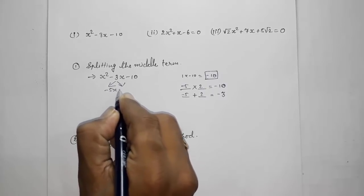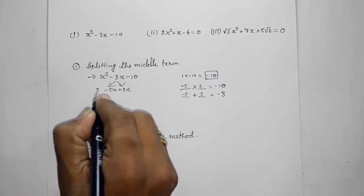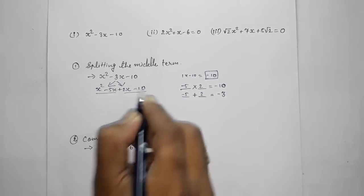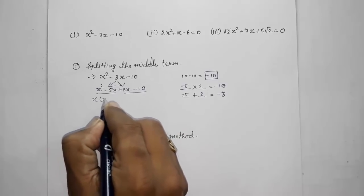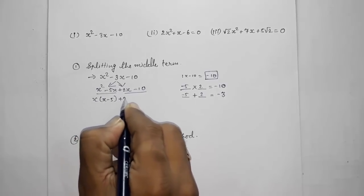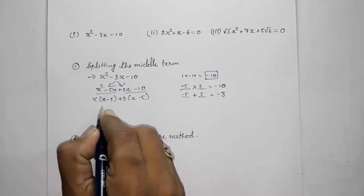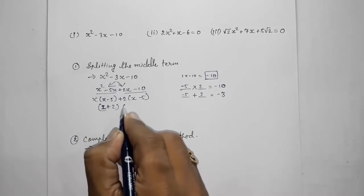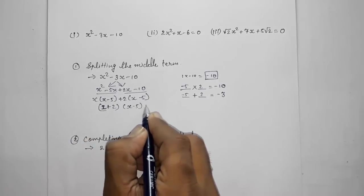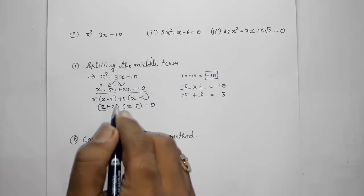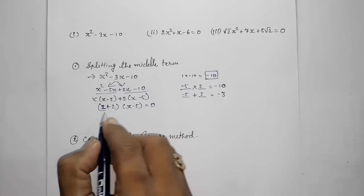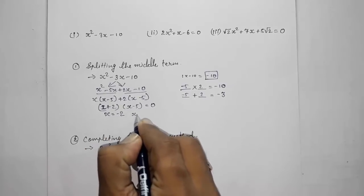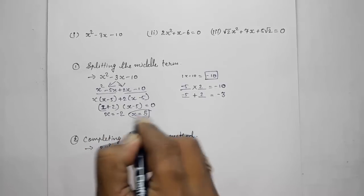We split the middle term using these two factors, giving: x² − 5x + 2x − 10 = 0. Taking common factors: x(x − 5) + 2(x − 5) = 0, so the factors are (x + 2)(x − 5) = 0. The roots are x = −2 and x = 5.